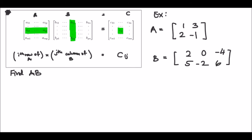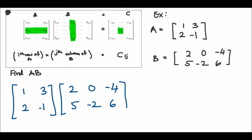First, check whether the product exists by checking the sizes. Matrix A is a 2 by 2 matrix and matrix B is a 2 by 3 matrix. These inner numbers are both 2, so the product of A times B is defined. The size of the product matrix will be 2 by 3. Let me also ask: is the product B times A defined? That's for you to answer.